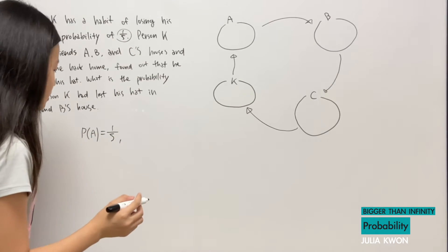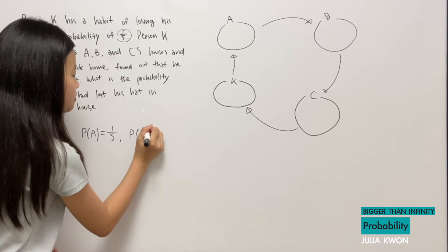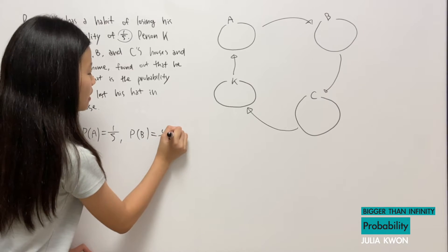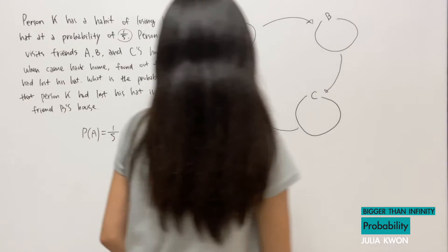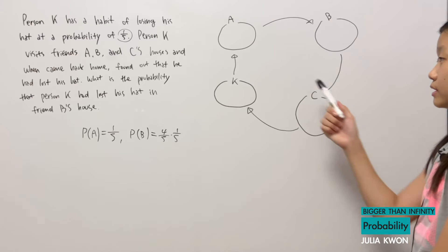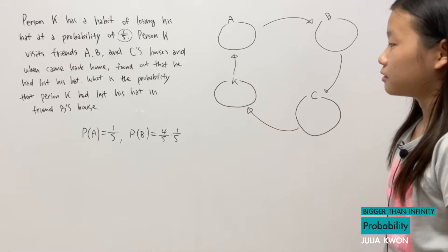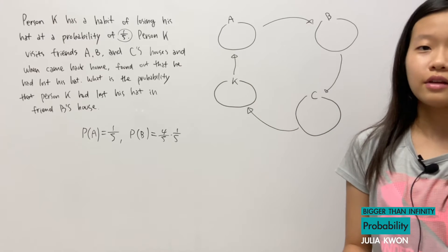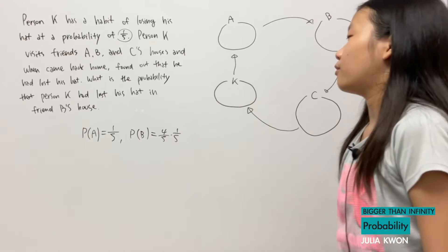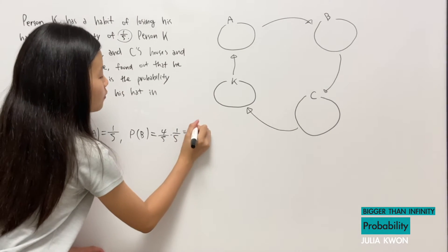And the probability of him losing his hat at his friend B's house will be equal to 4/5 multiplied by 1/5, because for him to lose his hat in B's house, that means that he didn't lose his hat in house A. So the probability of not losing his hat in house A is 1 minus 1/5, which is equal to 4/5. So if we multiply these two together, we get 4/25.